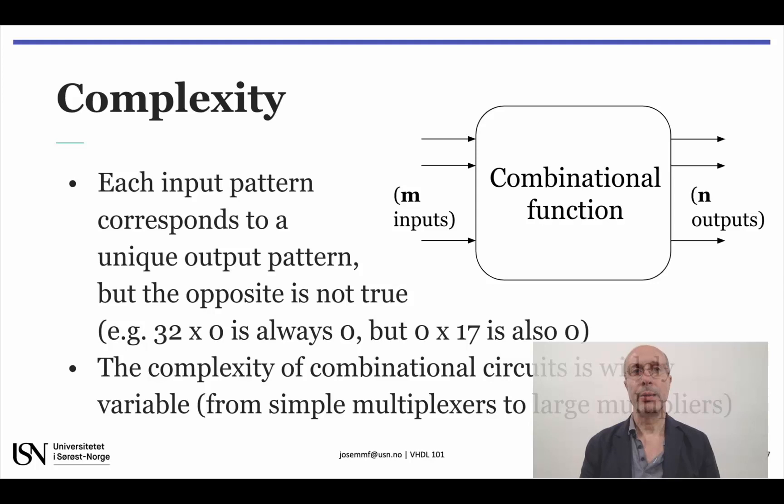Binary multiplication can be done in a strictly combinational manner, and it can be used to show that this type of circuits can range from very simple to fairly complex.